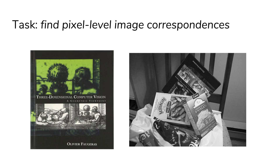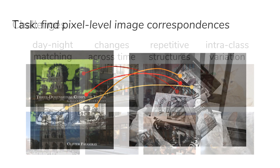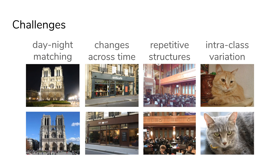In this work, we tackle the problem of finding pixel-level correspondences between two images. In particular, we consider challenging situations with large changes in appearance or viewpoint, such as day-night matching, changes across time, matching scenes with repetitive structures, or matching objects from the same classes with large intraclass variation.